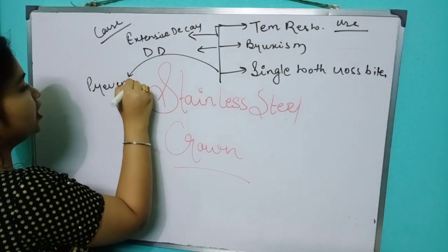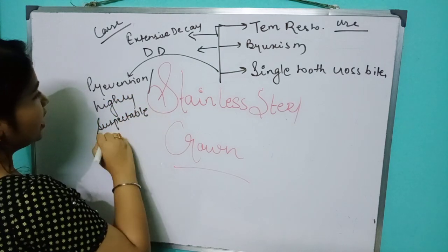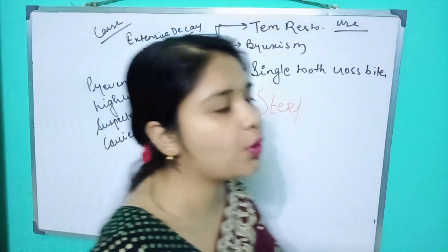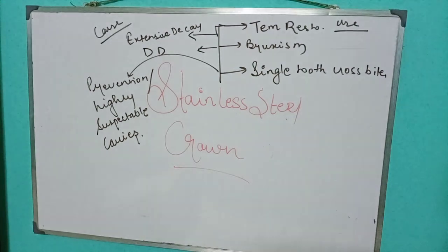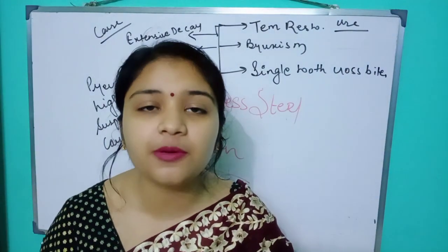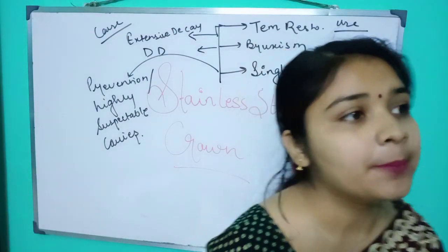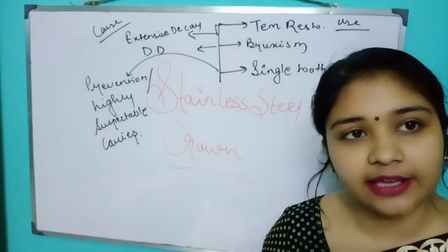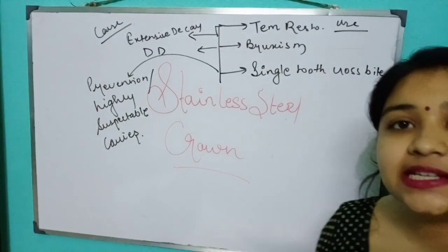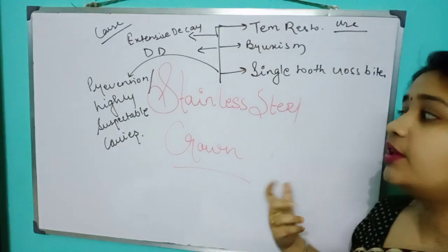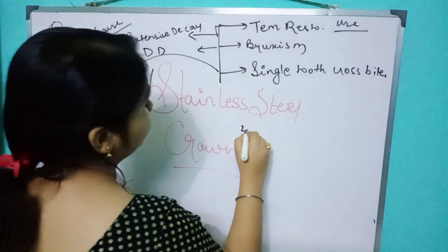So to summarize the first point: the stainless steel crown is used in extensive decay as a temporary restoration, in bruxism where there are hypoplastic or developmental disturbances, and in single tooth crossbite as a preventive measure for highly susceptible caries.